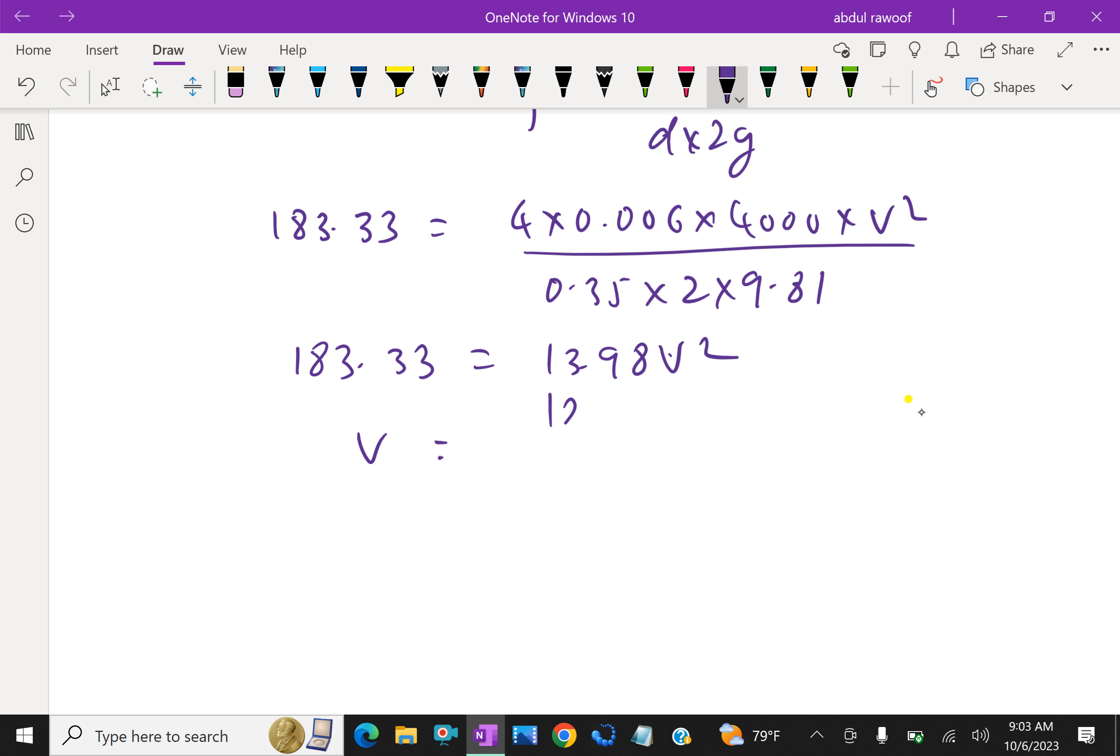Then v equals square root of 183.33 over 13.98. We get velocity for maximum power is 3.621 meter per second.